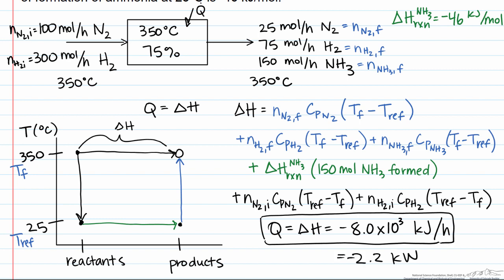To summarize: we calculated the heat required, which is related to the enthalpy change associated with the reaction process. From the heats of formation at 25°C of the reactants and products, we know ΔH at 25°C. Using constant heat capacity information, we cool the reactants to the reference temperature and heat the products to the operating temperature, allowing us to calculate the actual enthalpy required at 350°C and thereby determine the heat load.